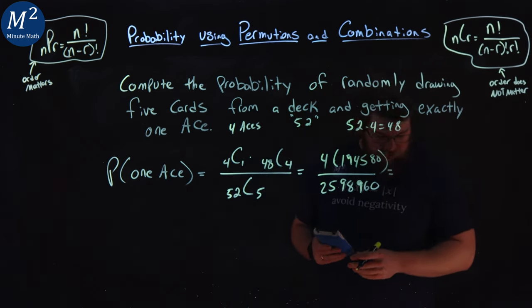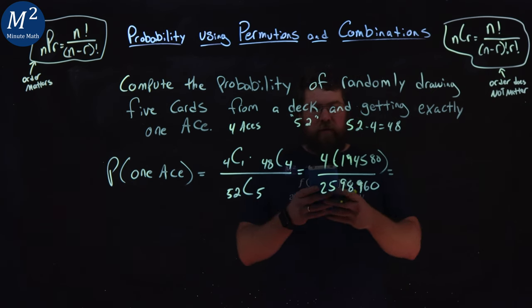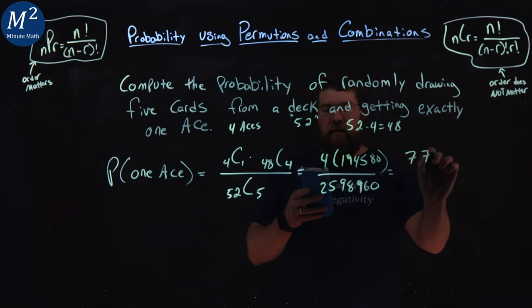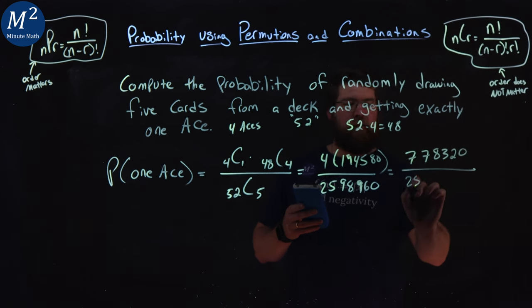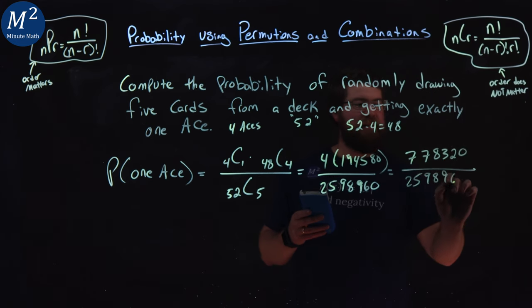So if we multiply all this out, that number times four in the numerator, we have 778,320 over 2,598,960.